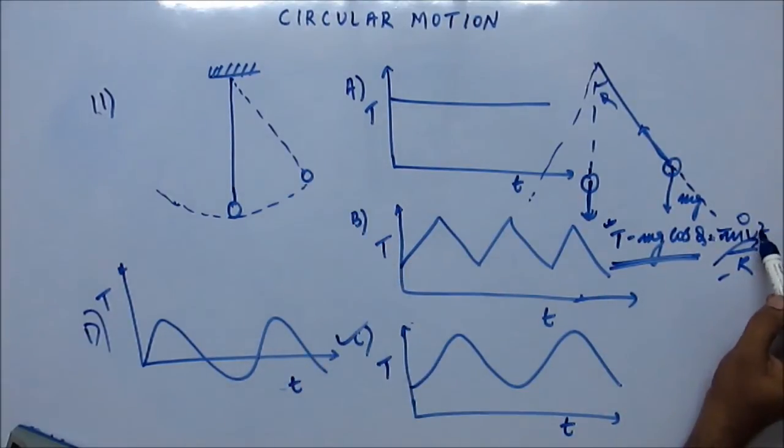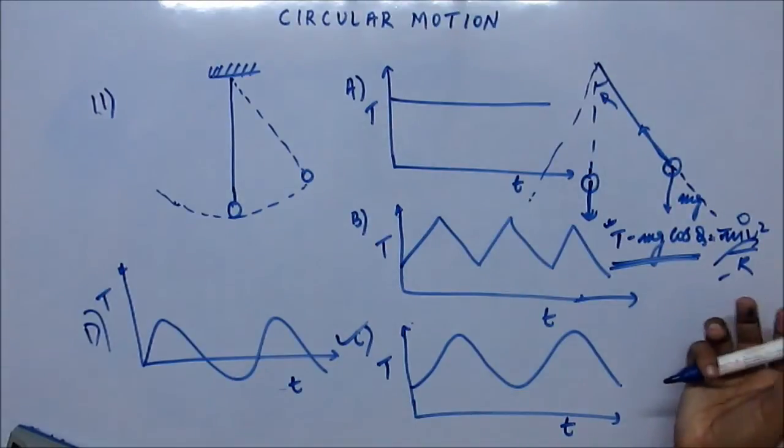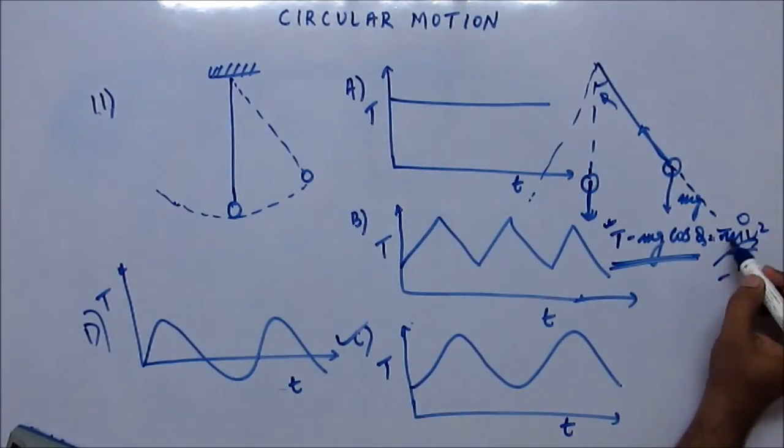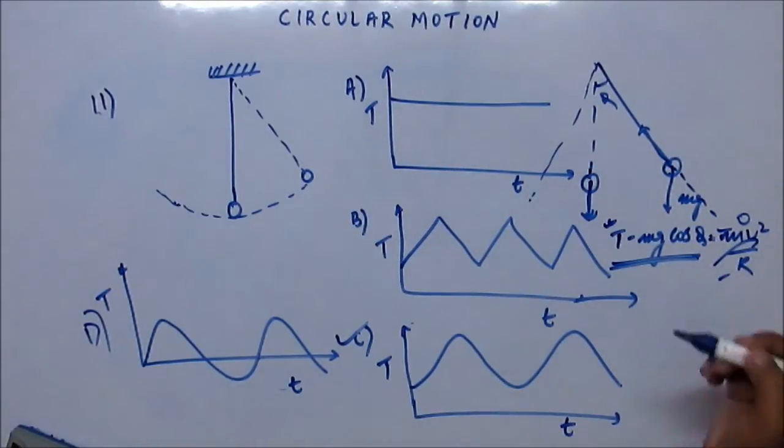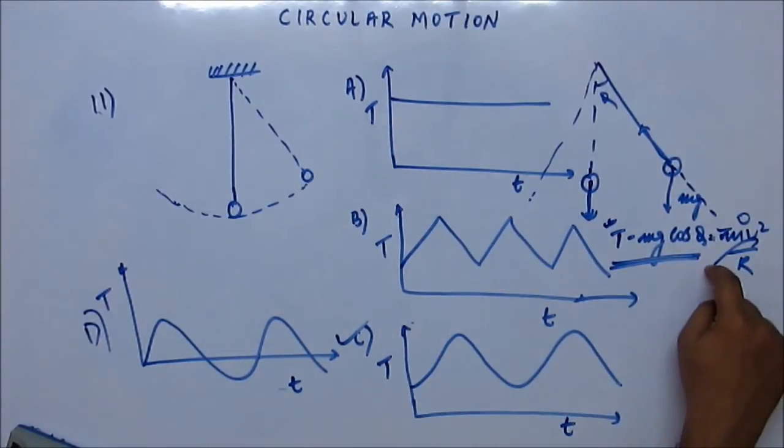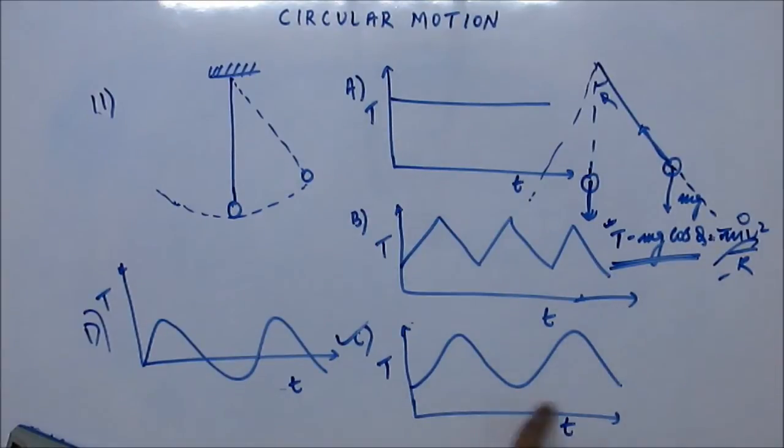Tension will not become even zero at any point of time, and that will not happen linearly. Because velocity is not increasing linearly. Right hand side is not increasing linearly. It is Mv squared upon R. So you will have a second degree. So it will not happen linearly, it will have some curvature like this. So option number C is the right option.